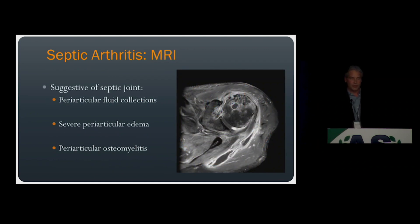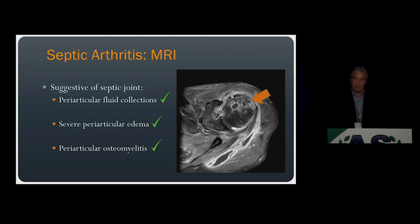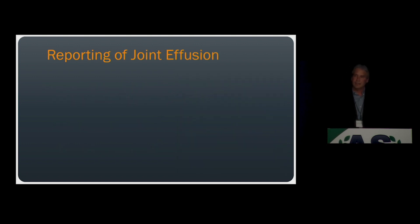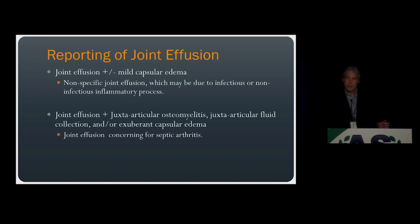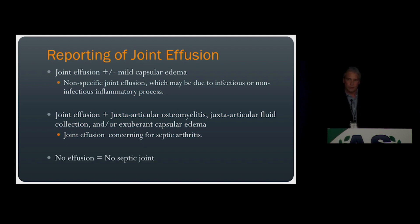Here's a shoulder MRI with suspected septic arthritis showing all three findings: periarticular fluid collections, severe periarticular edema, and periarticular osteomyelitis — placing this patient at high likelihood of a septic joint. When reporting, if there is a joint effusion with or without mild capsular edema, report it as a nonspecific joint effusion that may be due to infectious or non-infectious inflammatory process. If there is a joint effusion with juxta-articular osteomyelitis, fluid collections, or exuberant capsular edema, that is concerning for septic arthritis — though be careful not to call it diagnostic. And if there's no joint effusion, there's no septic joint.